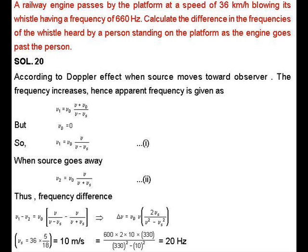Question 58: A railway engine passes by the platform at a speed of 36 km/h, blowing its whistle with a frequency of 660 Hz. Calculate the difference in frequencies of the whistle heard by a person standing on the platform as the engine goes past the person.